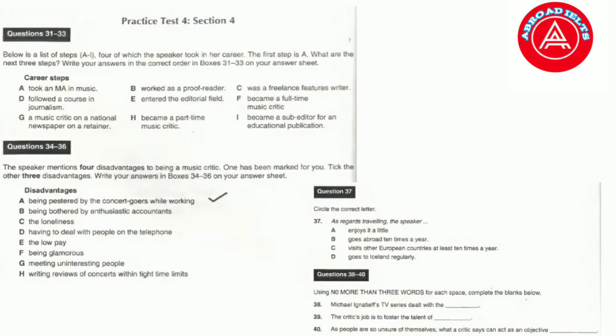Now turn to section four. Section four. You are going to hear two extracts from a lecture by a journalist on becoming a music critic, and then what a music critic's job involves. First, look at questions 31 to 37. As you listen, answer questions 31 to 37.